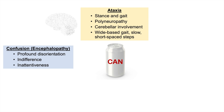A is for ataxia of gait — stance and gait are both affected. This is due to polyneuropathy, so patients may have sensory issues in their feet. There is also cerebellar involvement, and you will see a wide-based gait with slow and short-spaced steps because they feel wobbly on their feet.